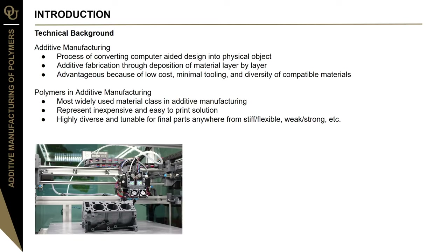When you look at additive manufacturing as a whole, there are many materials that can be used, but today we'll be focusing in on polymers. Polymers are really important in the field of additive manufacturing. They are the most widely used material class, representing an inexpensive and easy-to-print solution — inexpensive both in terms of the machine or process used, as these machines are generally cheaper to get started with, as well as the materials themselves. They're also highly diverse and tunable for final parts, anywhere from a stiff to a flexible material, weak or strong.